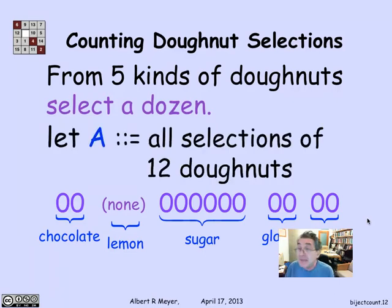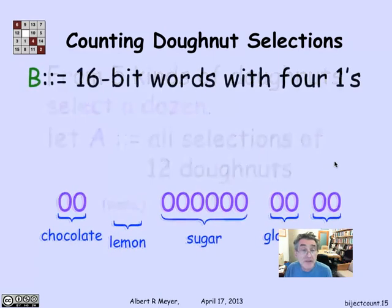This is what I'll call a selection of donuts. And I'd like to know how many such selections are there. Let that be the set A, the set of all these different ways of selecting 12 donuts when there are five flavors of donuts available. There's an obvious correspondence between the set A of donut selections and the set B of zeros and ones of length 16 that contain four ones.